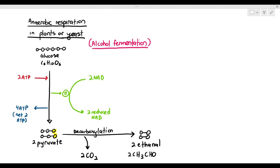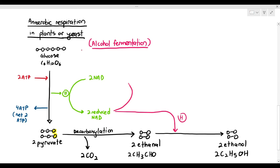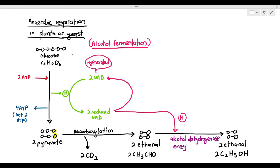Students ask whether they need to remember this — yes, they do. For ethanal to be converted into ethanol, look at the chemical formulas: ethanal has two carbons, four hydrogens, and one oxygen; ethanol has two carbons, six hydrogens, and one oxygen. To convert ethanal into ethanol, it needs to receive hydrogen. That hydrogen comes from the reduced NAD. When the reduced NAD provides hydrogen to ethanal to convert it into ethanol, the reduced NAD is converted back into NAD — and when NAD is regenerated, glycolysis can continue. The enzyme that catalyzes this process is alcohol dehydrogenase.